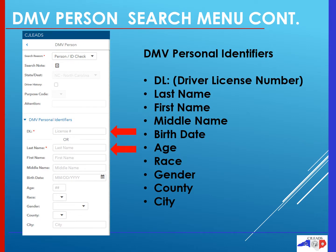When performing a DMV person search, you will need to add personal identifiers in order to narrow down your search and to pull up who you are looking for. That information includes a driver's license — mandatory unless you have the last name — first name, middle name, birth date, age, race, gender, county, and city. The more information you're able to enter, the more you're able to narrow down your result.